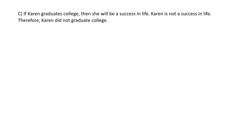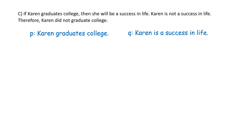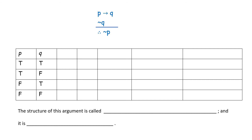Part C: if Karen graduates college, then she will be a success in life. Karen is not a success in life, therefore Karen did not graduate college. Let P be 'Karen graduates college' and Q be 'she will be a success in life.' Symbolically: premise one is P → Q; premise two, Karen is not a success in life, is ¬Q; and the conclusion, Karen did not graduate college, is ¬P. This formal argument can be written as [(P → Q) ∧ ¬Q] → ¬P.